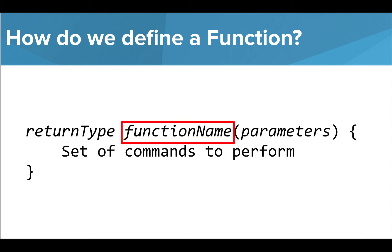Next, we write the name of the function, adhering to the same naming rules we learned for variables. We then write any parameters needed inside the parentheses. If we don't need any parameters, the parentheses can remain empty.